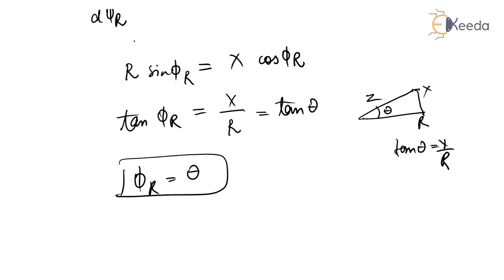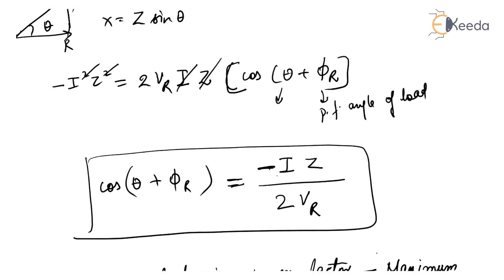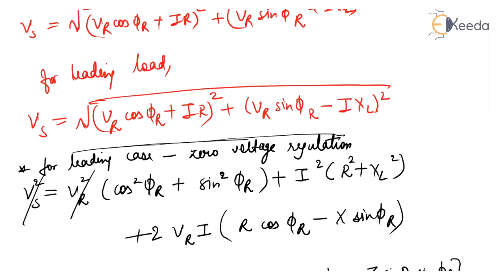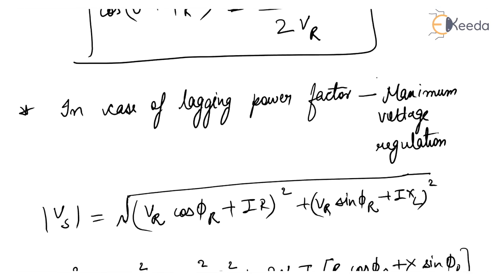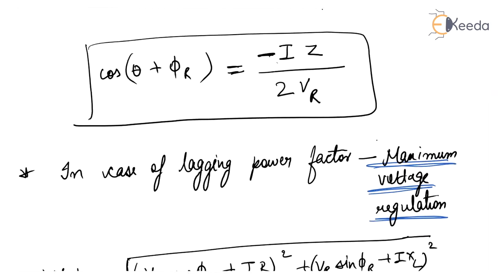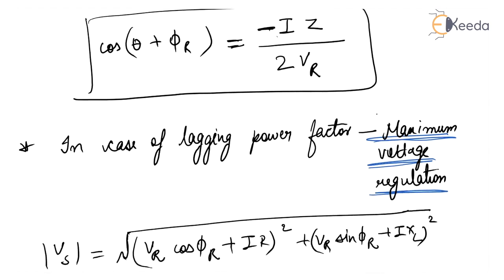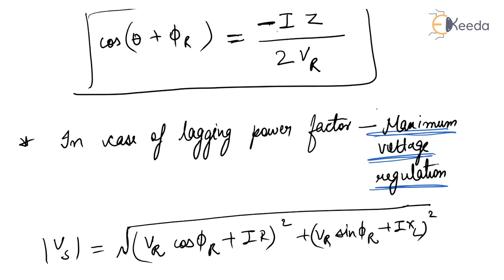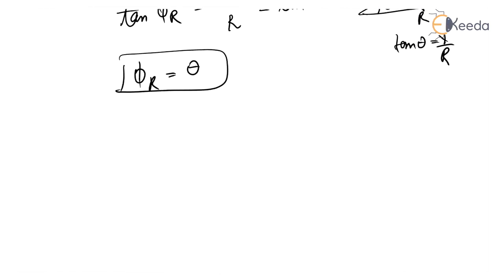To summarize: the first condition gives zero voltage regulation, which is possible in the case of leading power factor. The second condition gives maximum voltage regulation, which occurs in the case of lagging power factor. Now we'll find the approximate voltage regulation of a short transmission line.